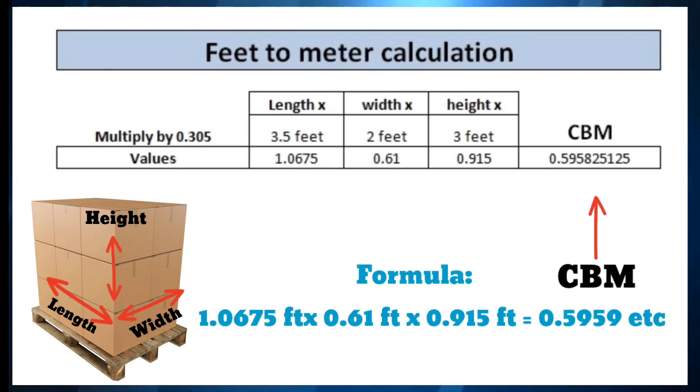If measurement is performed in feet, we have to multiply each value by 0.305. Suppose cargo boxes' length is 3.5 feet, width is 2 feet, and height is 3 feet. After multiplying each value by 0.305 and multiplying the values according to the formula, we get CBM.